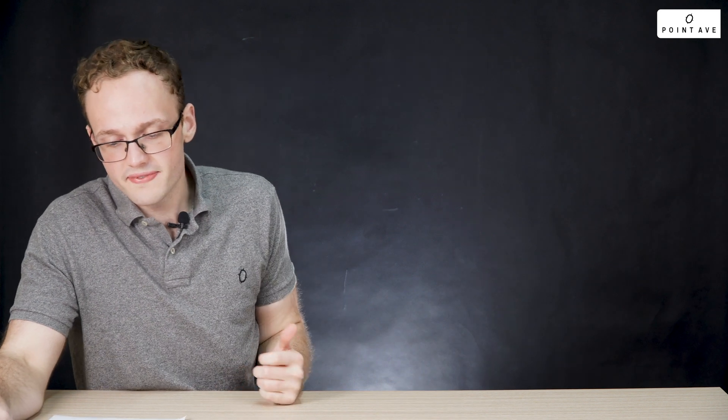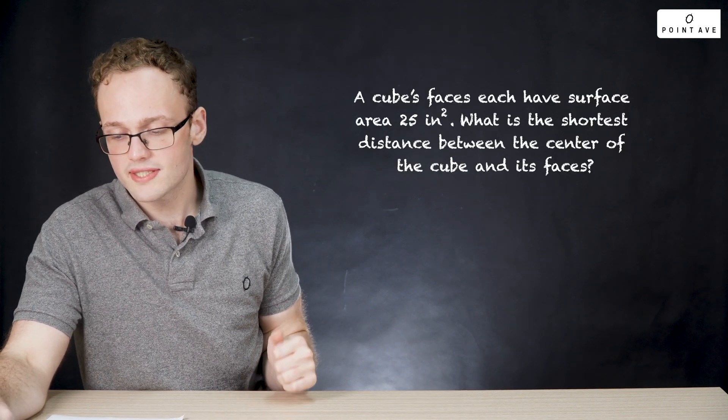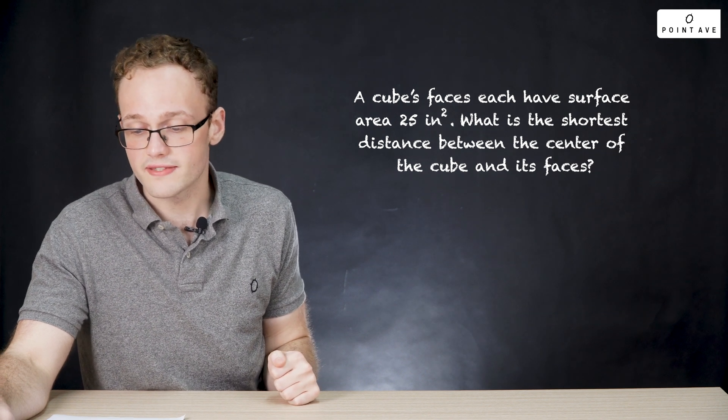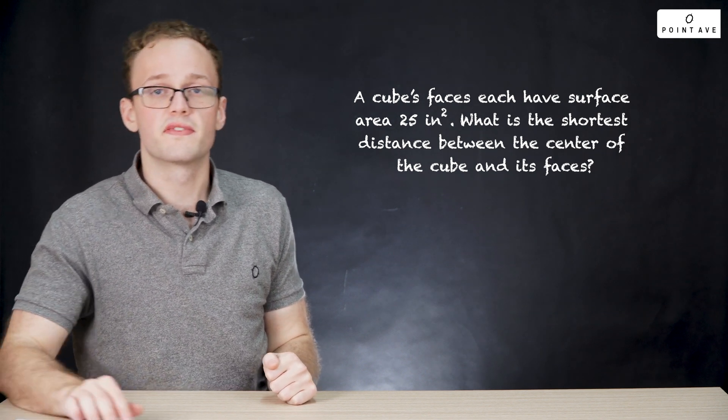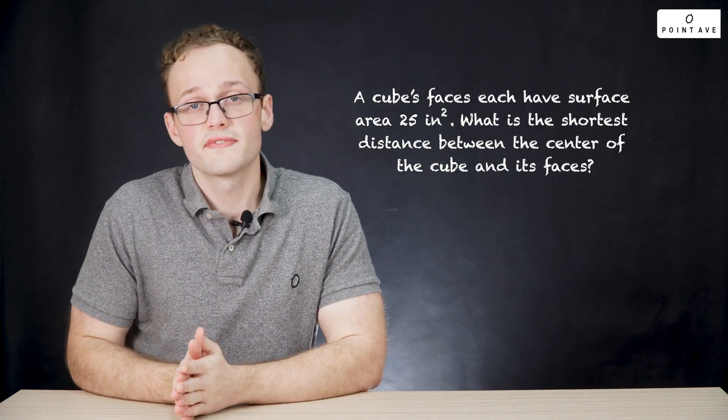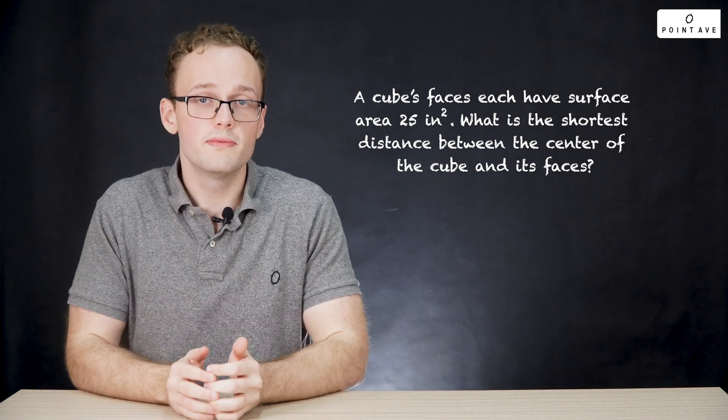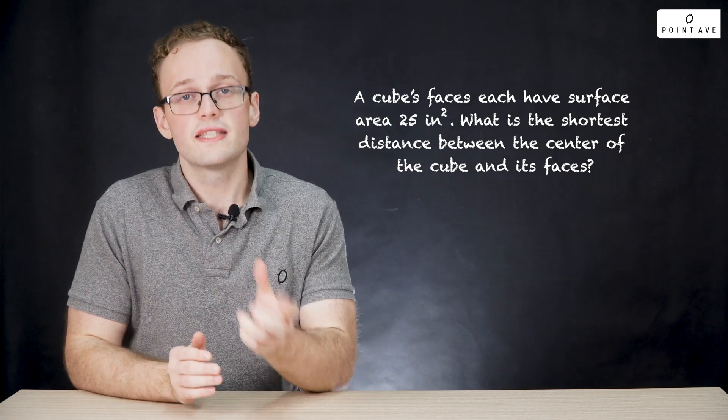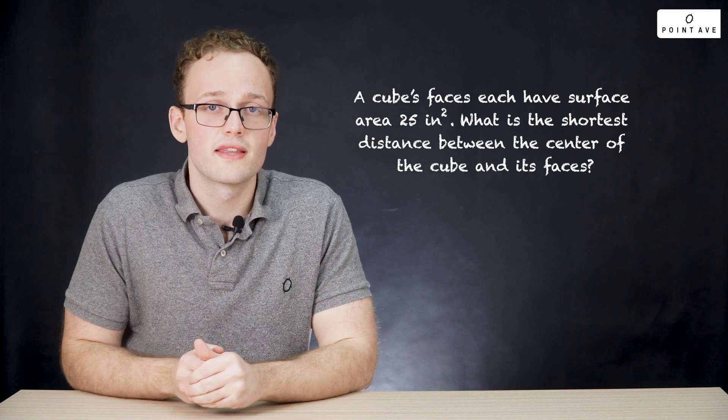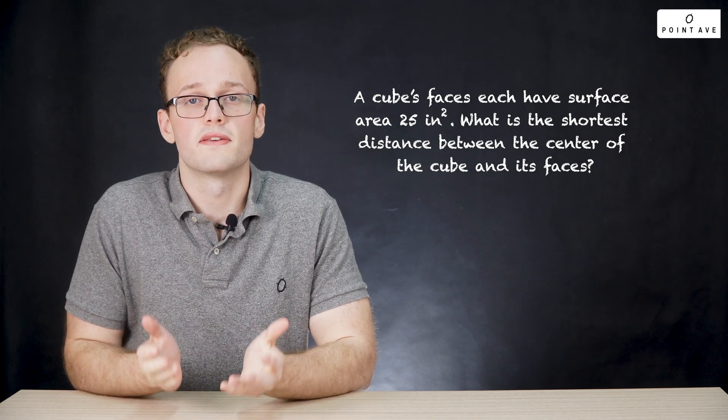Okay, now on to our last problem, where we'll learn a bit about surface area and length. This question reads, a cube's faces each have surface area 25 square inches. What is the shortest distance between the center of the cube and its faces? So first off, some vocabulary. What is a face? A face is the two-dimensional surface on a three-dimensional object. So in this case, for a cube, a three-dimensional object, the faces are squares. Think of game dice, for example. All right, now let's on to how do we solve this problem.